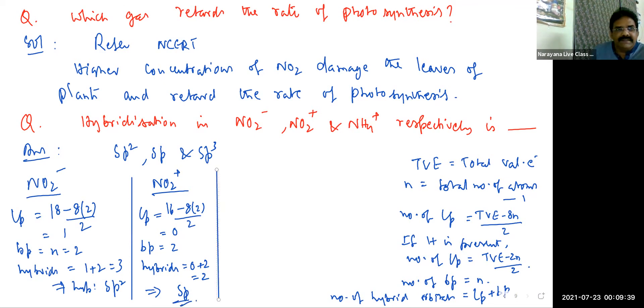Then NH4 plus. Because hydrogen is there, for lone pairs, the formula is this one: total valency electrons minus 2N by 2. So total valency electrons will be 5 plus 4, 9. Plus charge is there, so 9 minus 1, 8. And 8 minus, here total atoms are 5, so N equal to 5 minus 1, 4. So 8 minus 4, divided by 2.